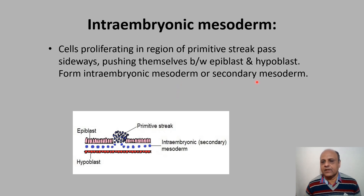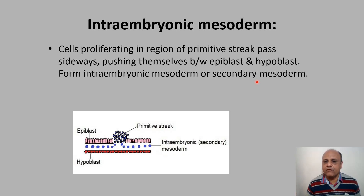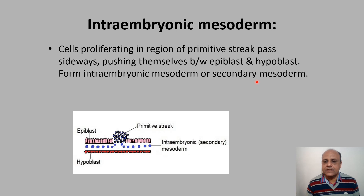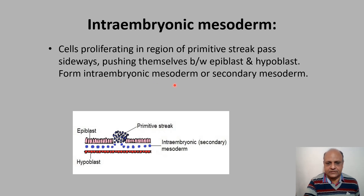These cells pass into this region and form the intra-embryonic mesoderm, or secondary mesoderm. It is called secondary mesoderm because primary mesoderm has already been formed by the trophoblast cells — what we call the extra-embryonic mesoderm. This secondary or intra-embryonic mesoderm is the first germ layer to form in human beings.